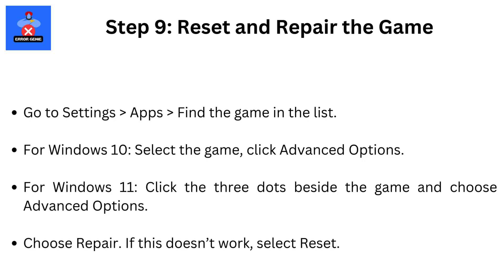Step 9: Reset and Repair the Game. Go to Settings, then Apps, then find the game in the list. For Windows 10, select the game and click Advanced Options. For Windows 11, click the three dots beside the game and choose Advanced Options. Choose Repair. If this doesn't work, select Reset.